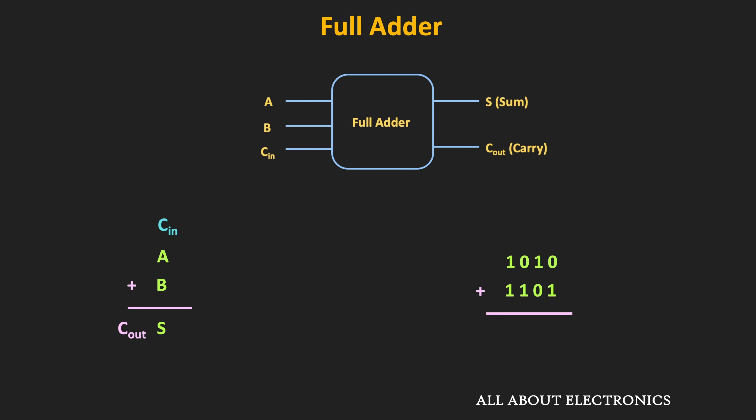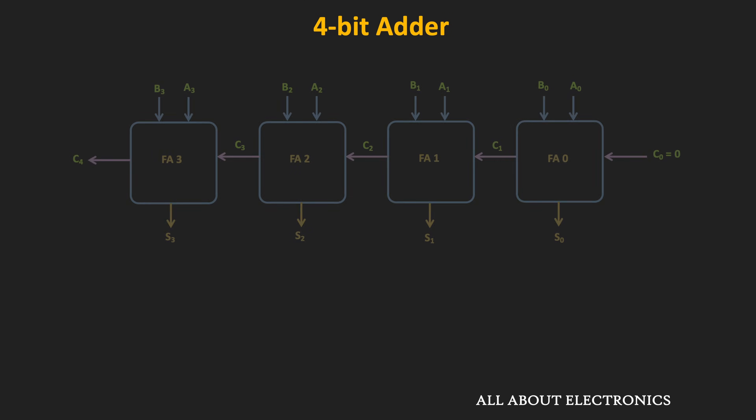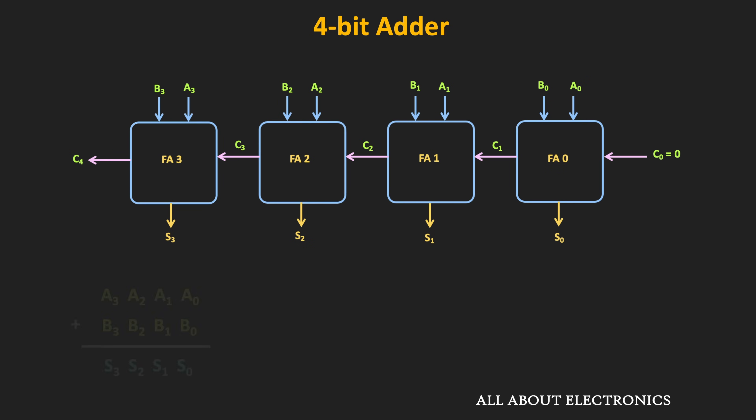Let's see the schematic of this four-bit adder. There are four full adders, and A and B are the two four-bit numbers. Full adder FA0 adds the LSB, A0 and B0, and generates sum bit S0 and carry bit C1. While adding the LSB, there is no previous carry, so C0 is set to zero.